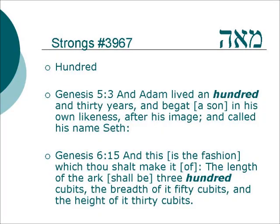The Hebrew word for hundred is mea. Genesis 5:3 — 'And Adam lived a hundred and thirty years, and begat a son in his own likeness, after his image, and called his name Seth.' So we see that it is used to measure time.